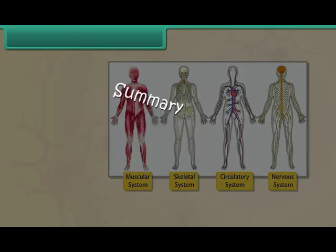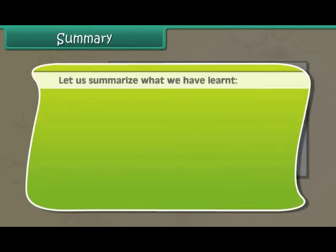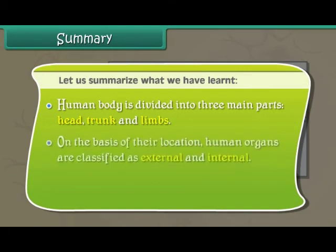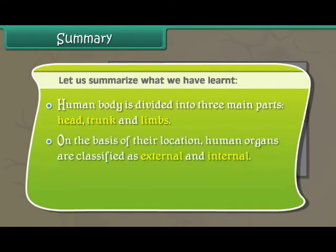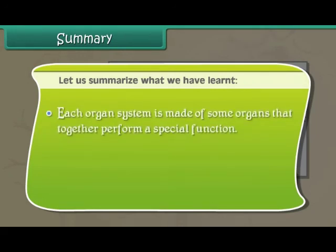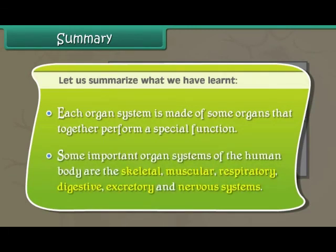Summary. Let us summarize what we have learned. The human body is divided into three main parts: head, trunk and limbs. On the basis of their location, human organs are classified as external and internal. Eyes, ears, nose, tongue and skin are the five sense organs of the human body. Each organ system is made of some organs that together perform a special function. Some important organ systems of the human body are the skeletal, muscular, respiratory, digestive, excretory and nervous system.